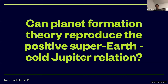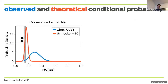Back to the question: how does our model compare to the observed trend that super-Earths and cold Jupiters seem to like each other and occur together? The quantity we're interested in is the conditional probability of cold Jupiter occurrence given there is at least one super-Earth in the system. This plot shows this quantity in blue for the observed probability distribution from Zhu and Wu 2018. They didn't have a huge number of systems, but the distribution centers around 30%, which is much higher than the observed frequency of finding any cold Jupiter in the system, which lies at around 10%. So it's really significantly enhanced.